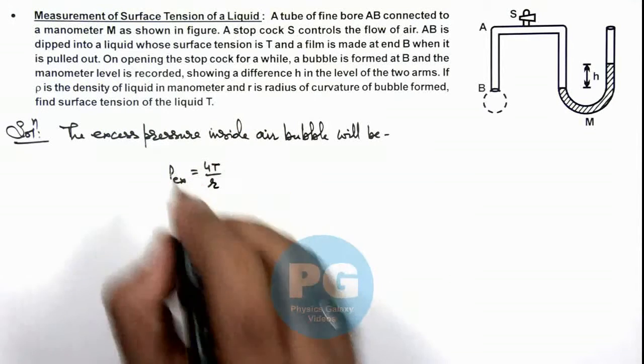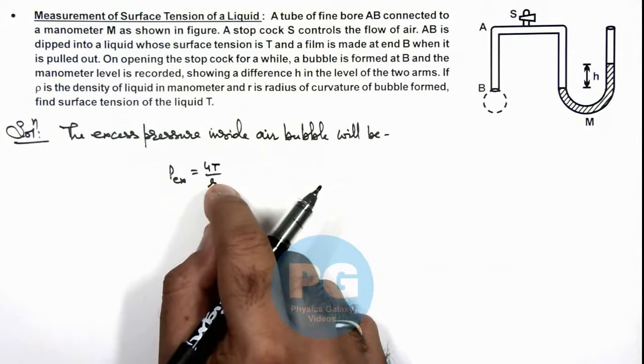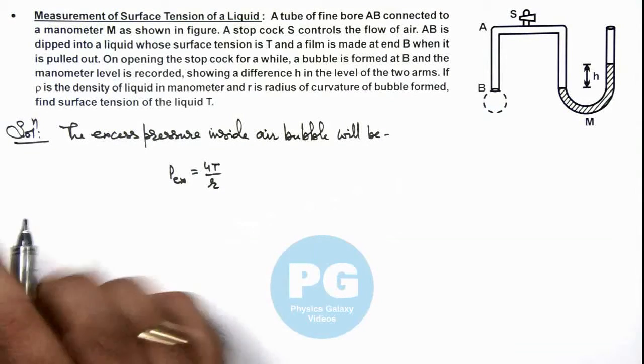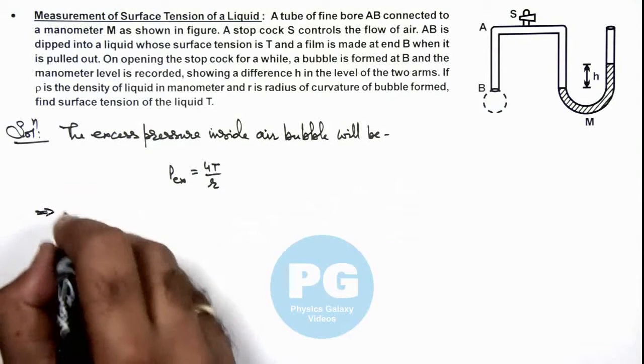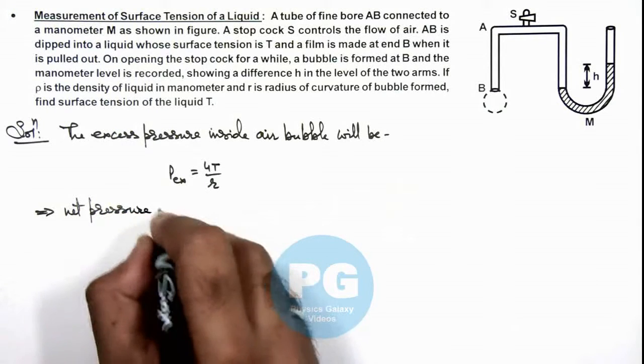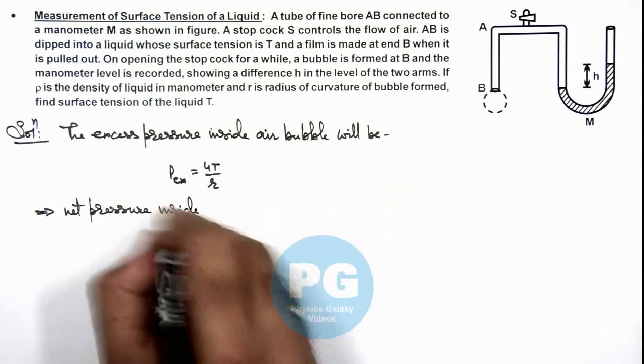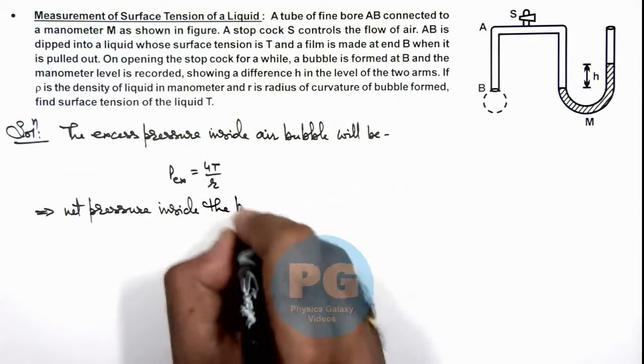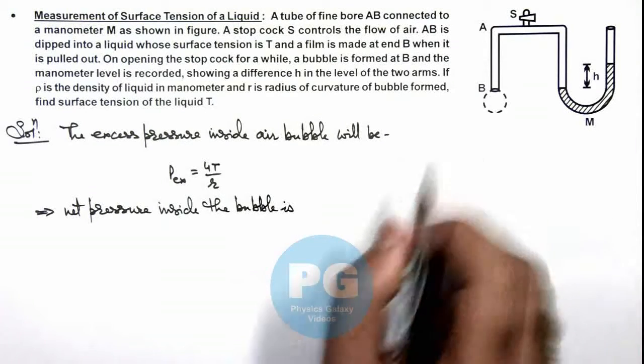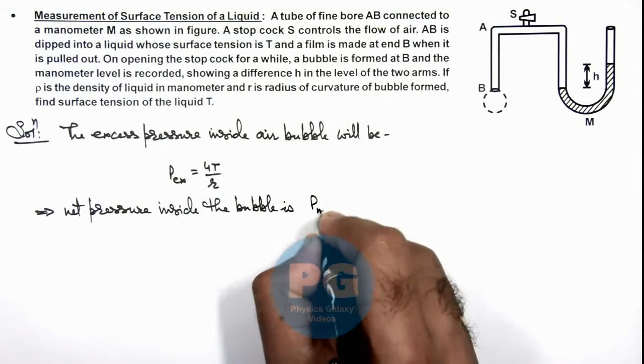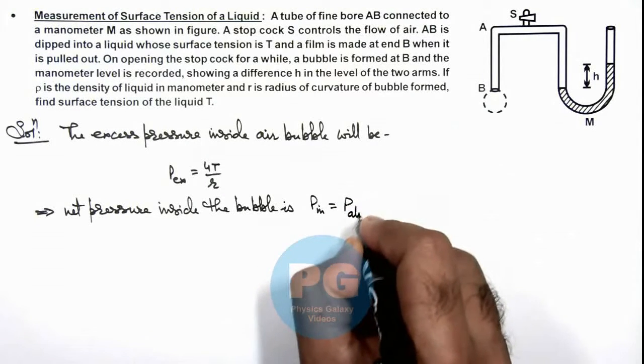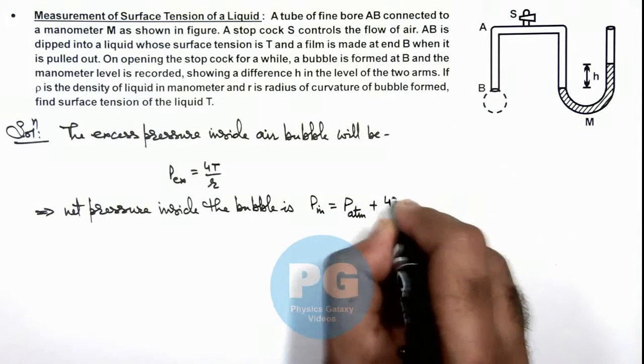And r is the radius of curvature of the bubble. This implies net pressure inside the bubble is, as outside pressure is P atmospheric, we can write P inside as P atmospheric plus 4T by r.